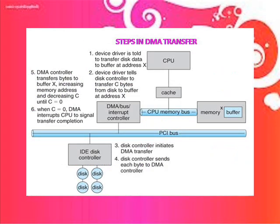Steps in DMA transfer: Step 1 — device driver is told to transfer disk data to buffer address X. Step 2 — device driver tells disk controller to transfer disk data to buffer address X. Step 3 — disk controller initiates DMA controller. Step 4 — disk controller sends each byte to DMA controller. Step 5 — DMA controller transfers bytes to buffer X, increasing memory address and decreasing count C until C equals 0. Step 6 — when C equals 0, DMA interrupts CPU to signal transfer completion. Thank you.